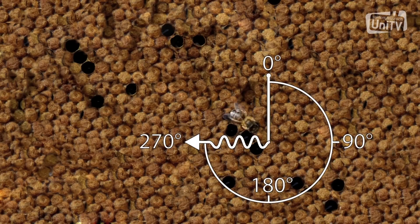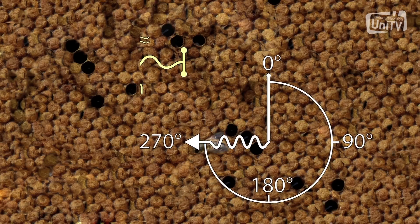Then it goes back to the starting position and repeats the waggle run. It may repeat it as many as a hundred times, and it repeats it the same each time.